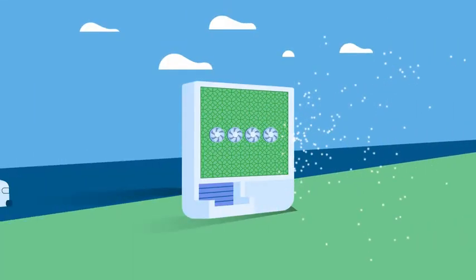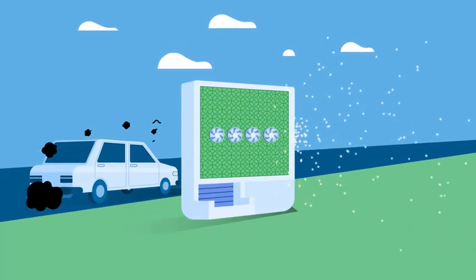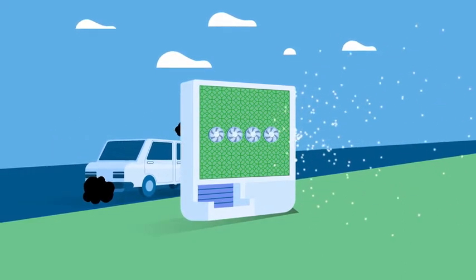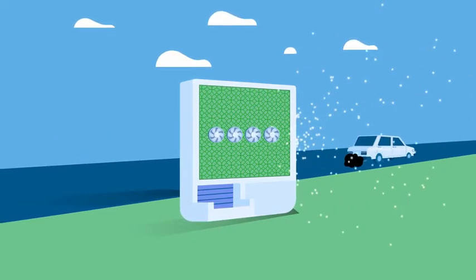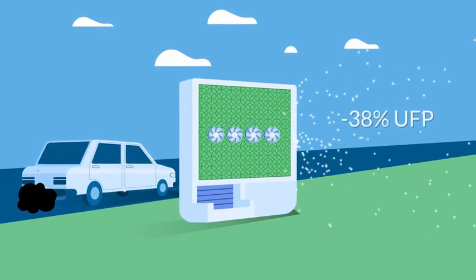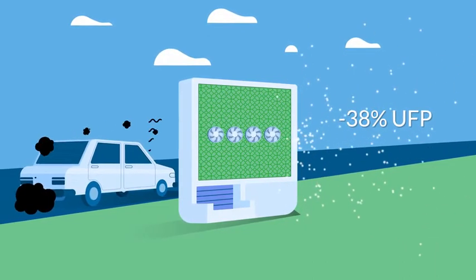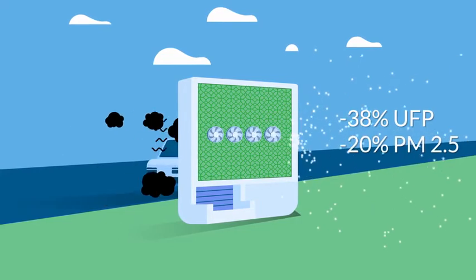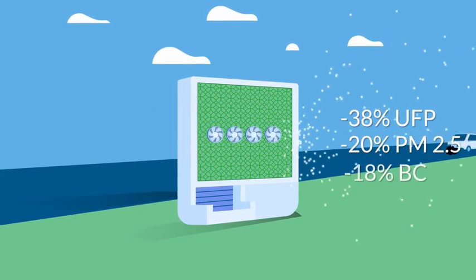The results of the Independent Research Institute show that, in ventilation mode, the air passing through the CityTree is filtered from ultrafine particles by up to 38%, PM2.5 is reduced by up to 20%, and black carbon by up to 18%.